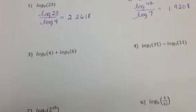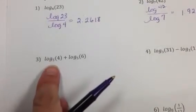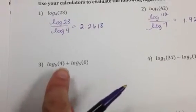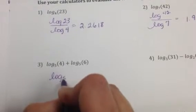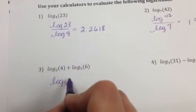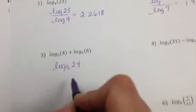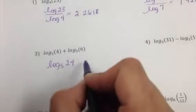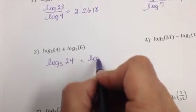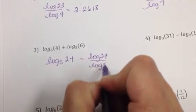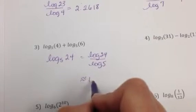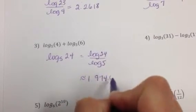Okay. For number 3, we have to do something first. We're going to use our rules, our properties of logarithms to combine that to a single logarithm first. Remember, when we're adding, we can multiply what we're taking the log of. And now we can rewrite it as log of 24 divided by log of 5. And that's approximately 1.9746.